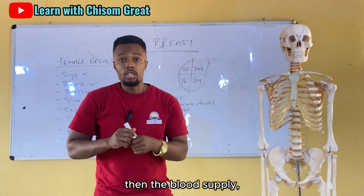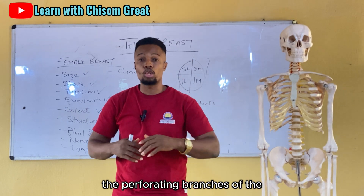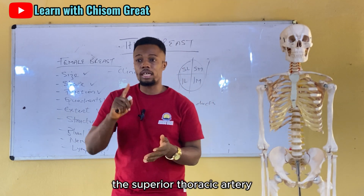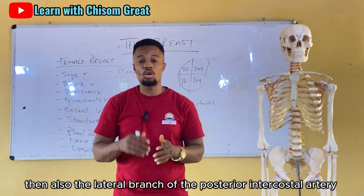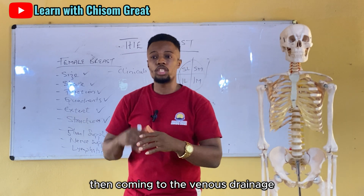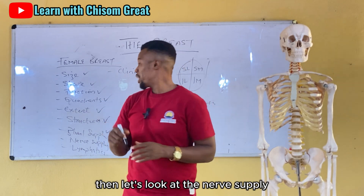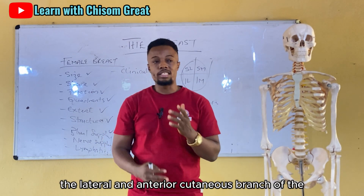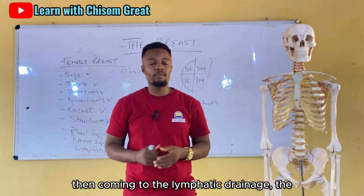The mammary gland is highly vascular. Its blood supply comes from the perforating branches of the internal thoracic artery, the lateral thoracic artery, the superior thoracic artery, the thoracoacromial branch of the axillary artery, and the lateral branches of the posterior intercostal arteries. Venous drainage is via the axillary vein and the internal thoracic vein. The nerve supply comes from the lateral and anterior cutaneous branches of the fourth to sixth intercostal nerves.